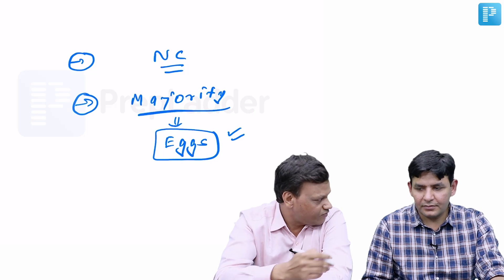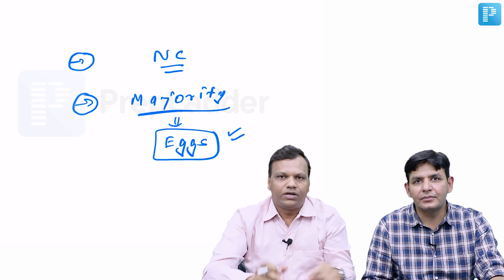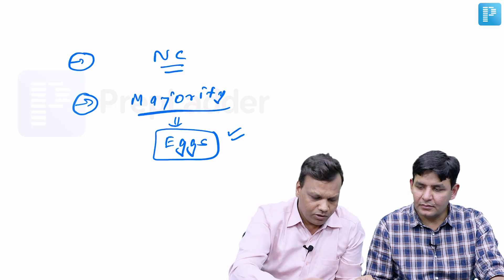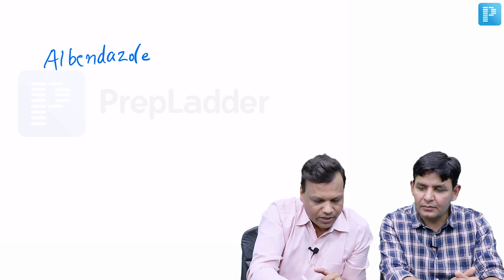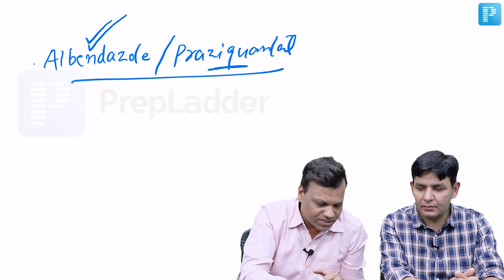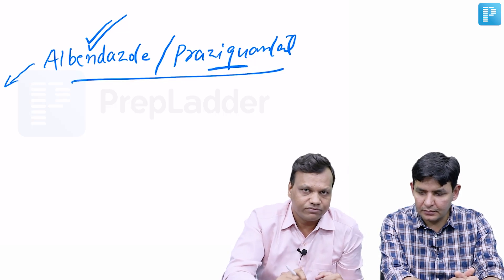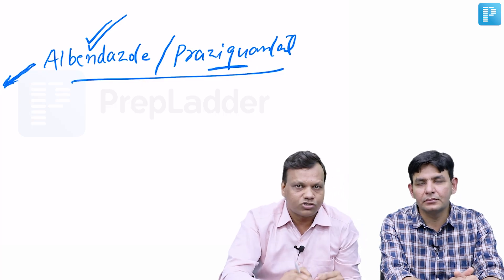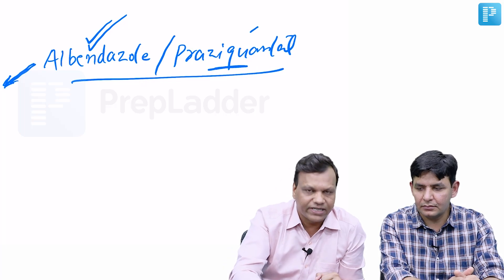Cysticercus is the larva of Taenia solium. For treatment of neurocysticercosis, there are two goals: treating the seizures and killing the organism. The drugs against Cysticercus are albendazole or praziquantel — both are effective, but albendazole is preferred. This is because albendazole is more effective and, importantly, does not interfere with steroids, whereas praziquantel interferes with steroid action.